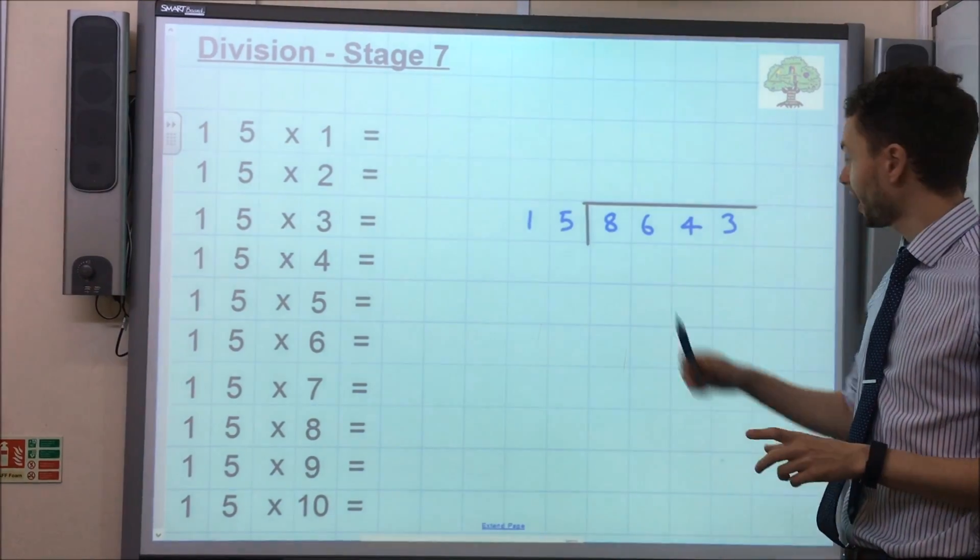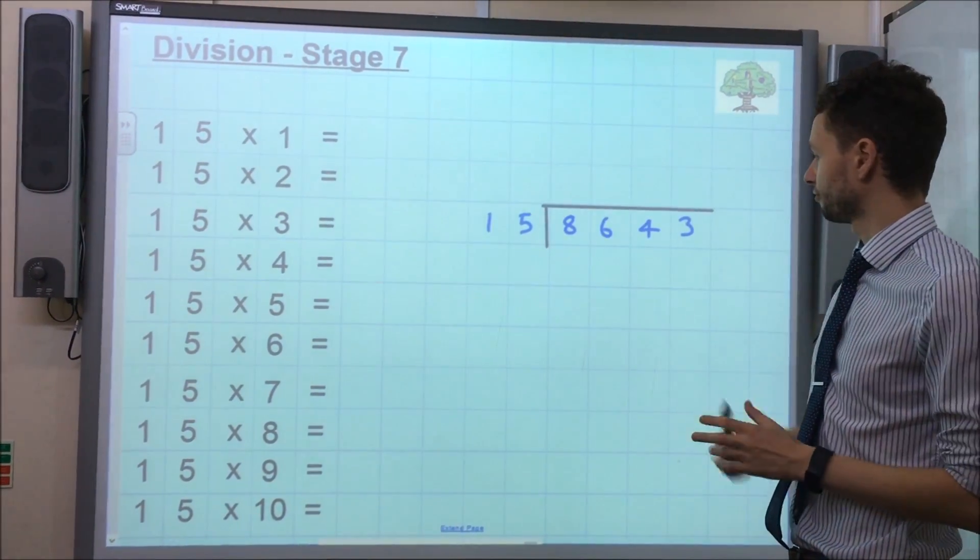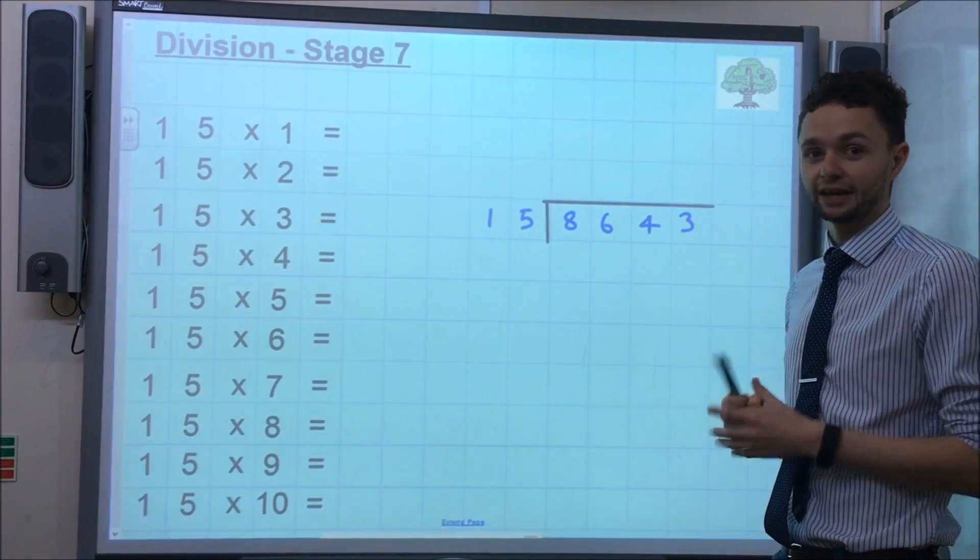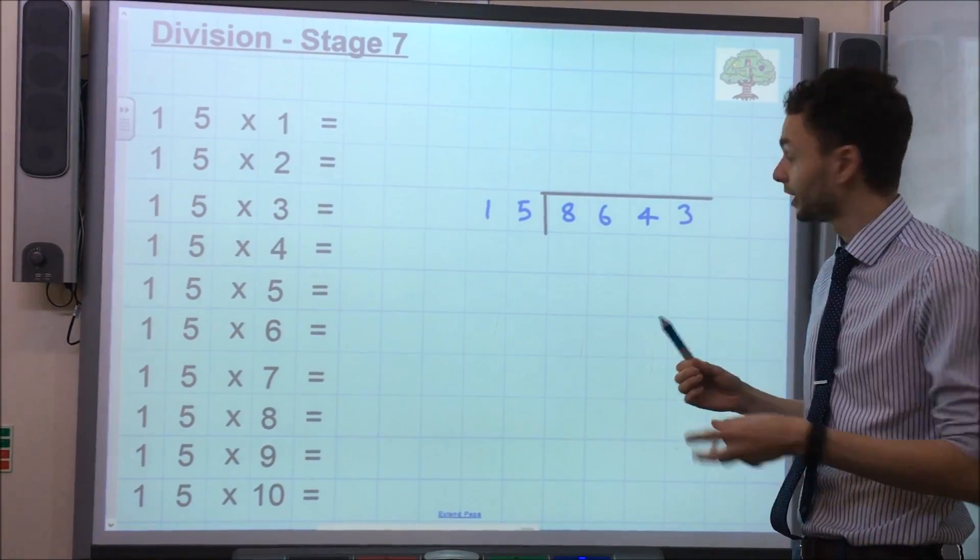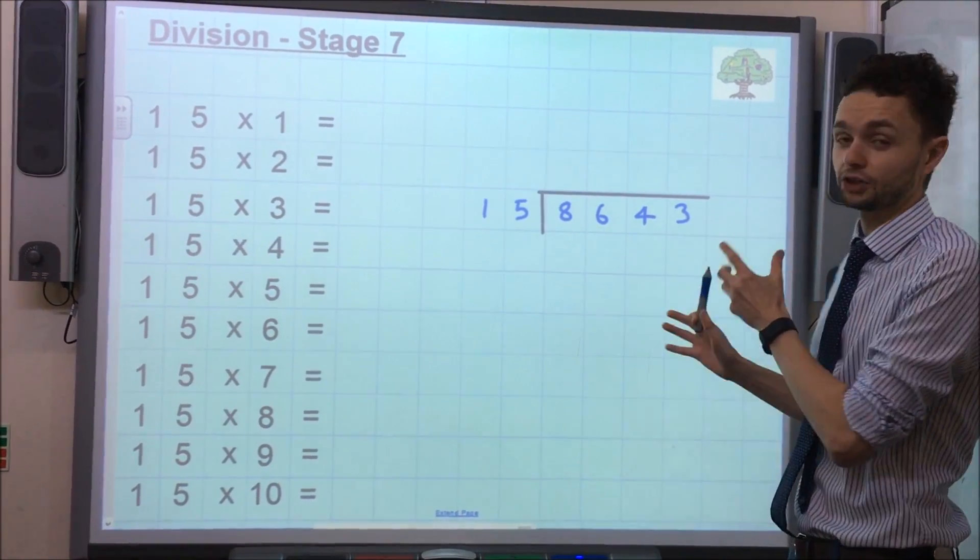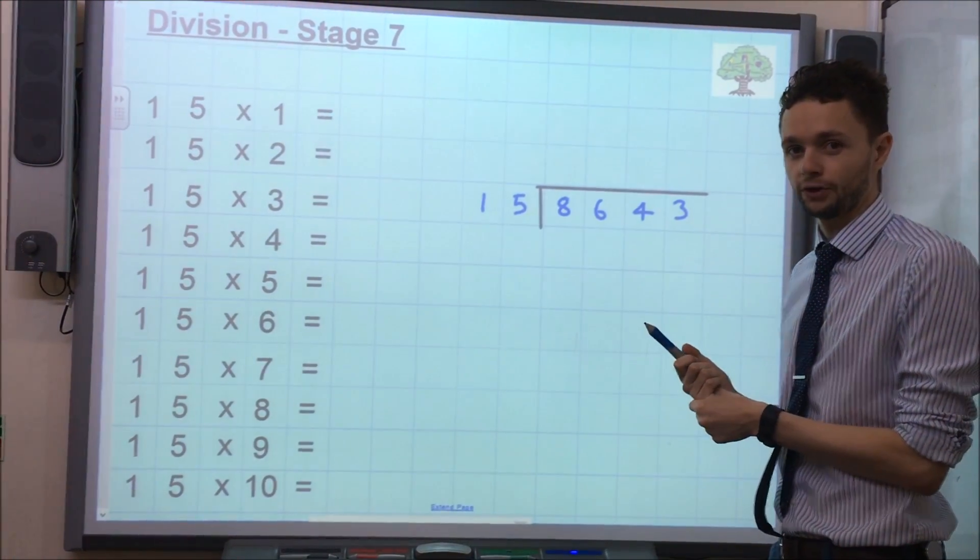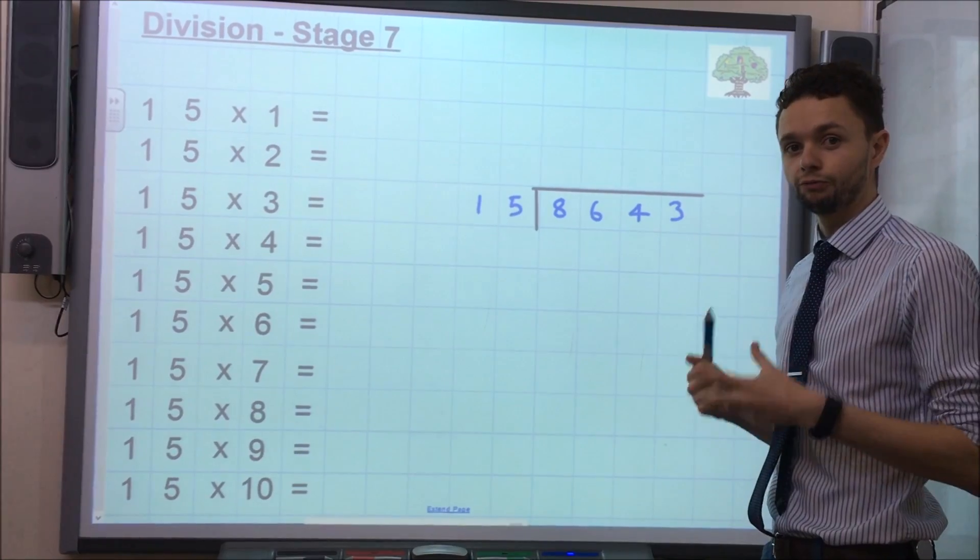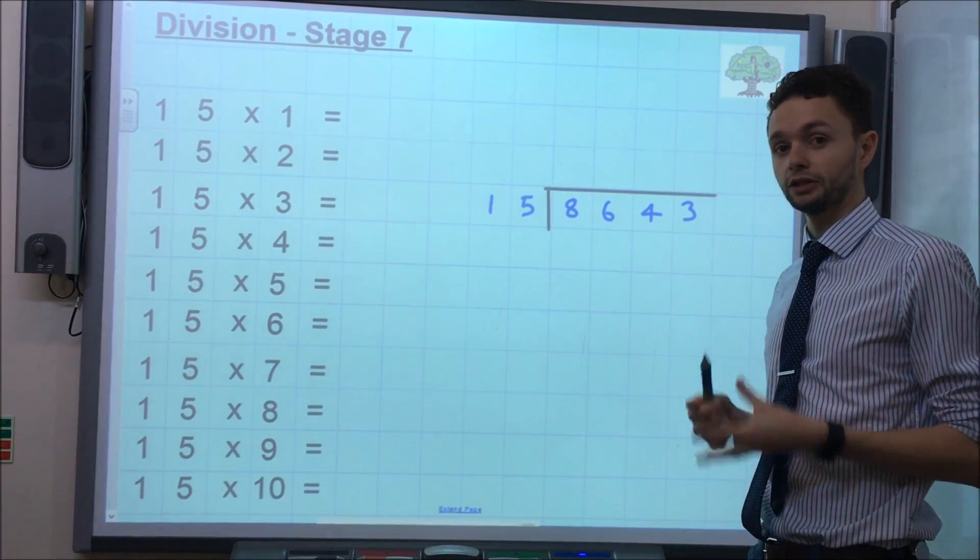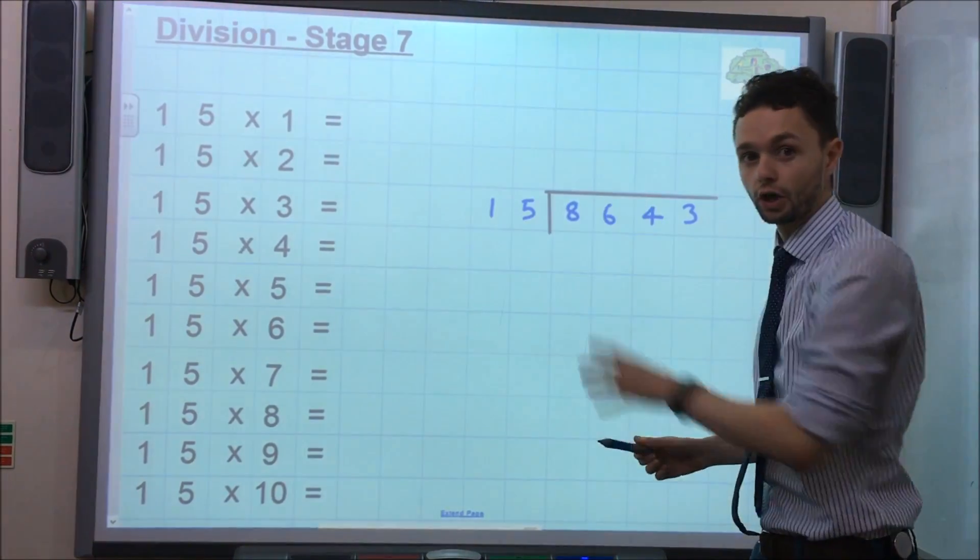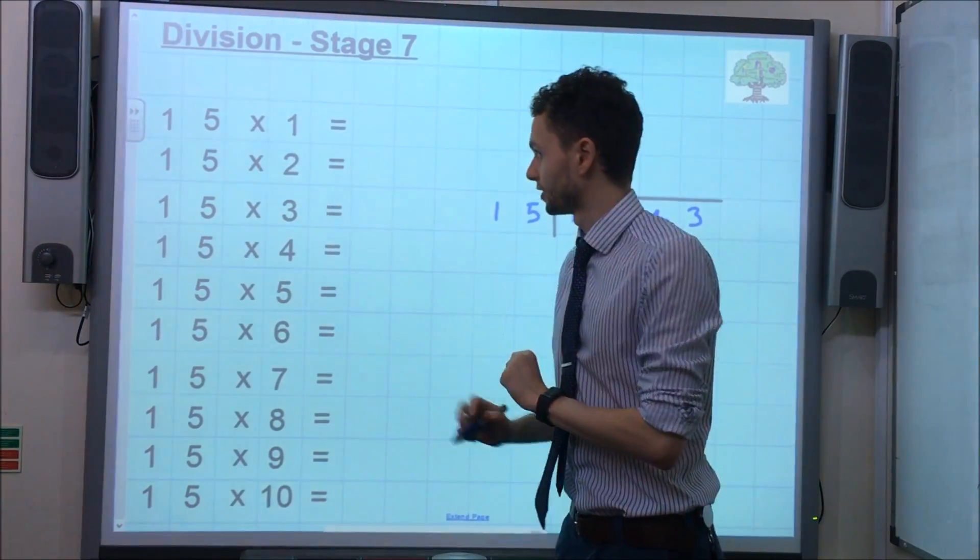So we've got our calculation here, 8,643 divided by 15. Now obviously not everybody knows their 15 times table off by heart, so to help us solve this calculation we'll encourage the children to quickly jot down the 15 times table first. And this is where if you've got really good doubling and halving skills, really good mental addition and subtraction skills, you'll be able to do this in no time at all. So let's have a quick go at it.